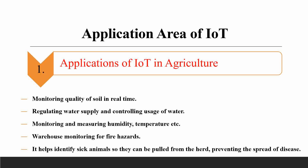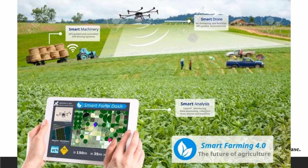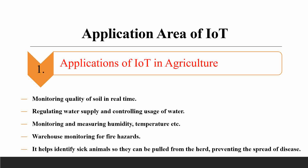IoT enables measuring humidity and temperature, even weather forecasting, so we can monitor data in real-time. It also helps to identify sick animals so they can be pulled from the herd.